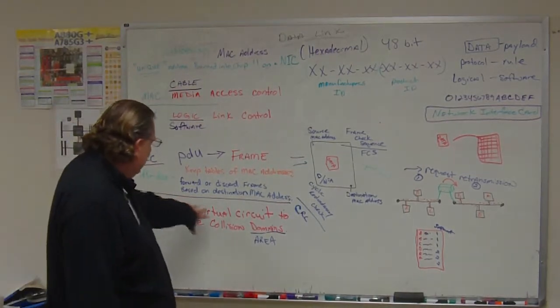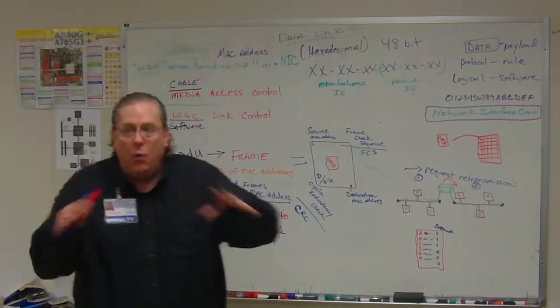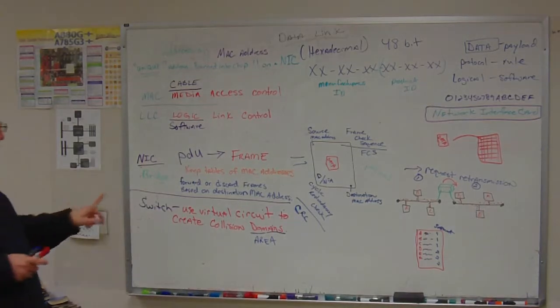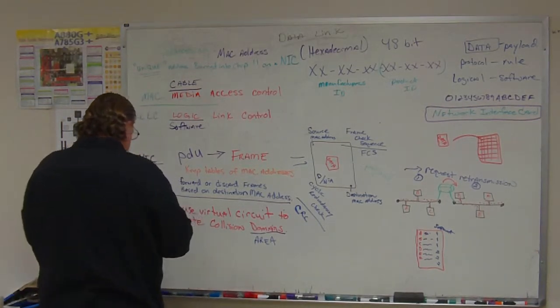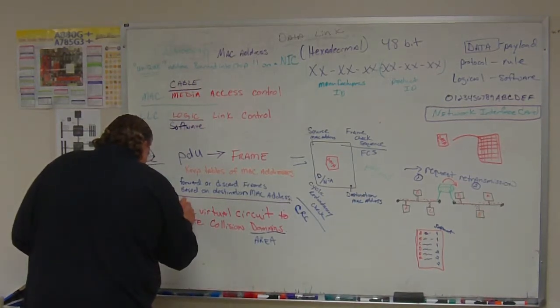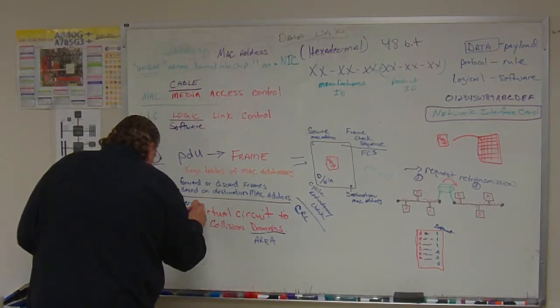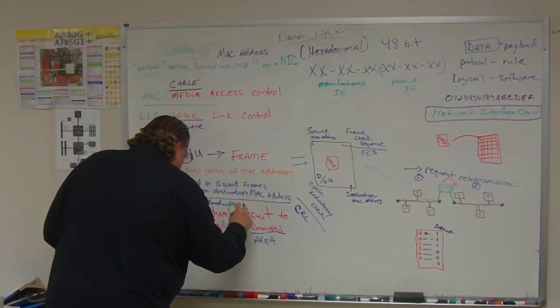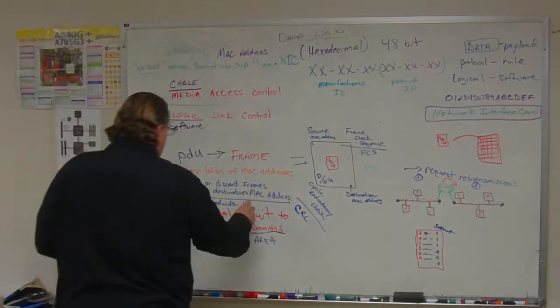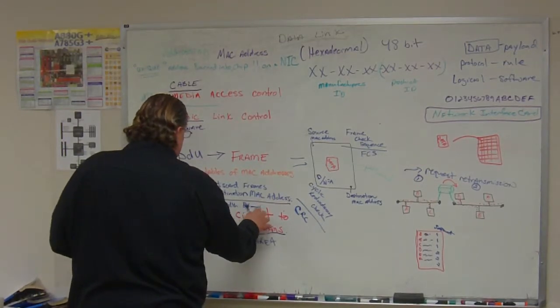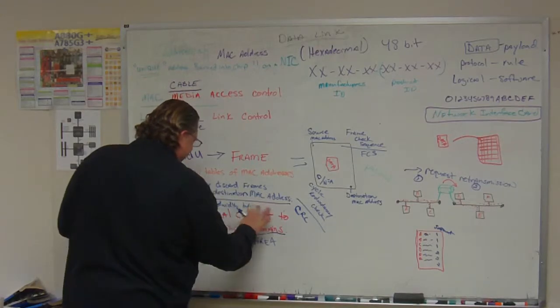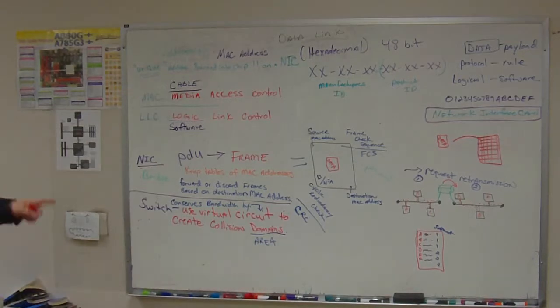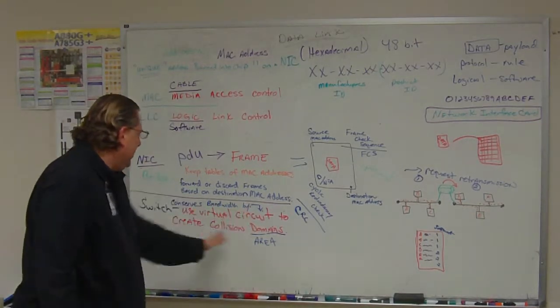Since a switch uses a virtual circuit to create a collision domain, it means that no one else can hear my traffic, unless they're in my little tiny collision domain. So that's how it conserves bandwidth. Conserves bandwidth. Bandwidth. By. So a switch conserves bandwidth by using a virtual circuit to create a collision domain. And then we know the domain, another word for domain is area.